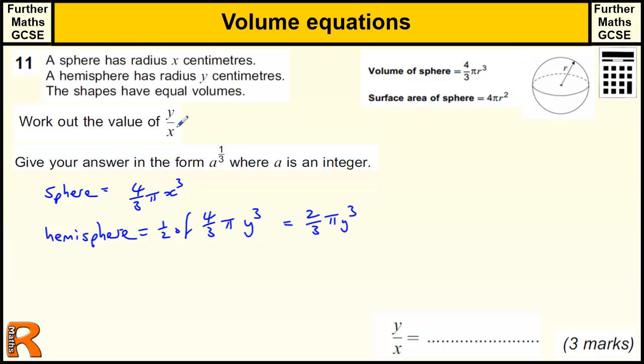Now we want to work out the value of y divided by x. So because these two are equal, the volume of the sphere and the volume of the hemisphere are equal, then we can say 4 thirds pi x cubed equals 2 thirds pi y cubed.